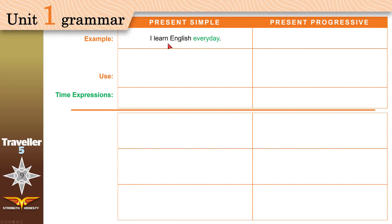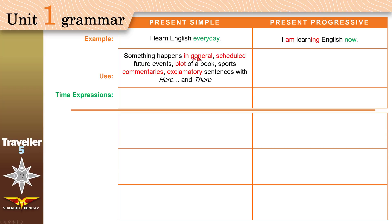'I learn English every day.' To change this into present progressive, we add the verb be: 'I am learning English' — not every day, it's happening right now. When do we use present simple and when do we use present progressive? If something happens in general, like a permanent state — 'you always go to school,' 'my father works as a teacher' — use present simple.